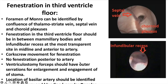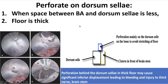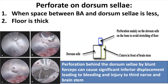Ventriculostomy forceps can be used for enlargement of the stoma and should have outer serrations. The location of the basilar artery should be identified to avoid injury. Vascular Doppler or navigation can be used when there is a thick floor. The end stage of the procedure is a bare basilar artery. There may be a second membrane which should be perforated. Perforation can be made on the dorsum sellae when there is less space between the basilar artery and dorsum sellae — but perforation behind the dorsum sellae by blunt forceps can cause significant inferior displacement leading to bleeding and injury to the third cranial nerve and brainstem.